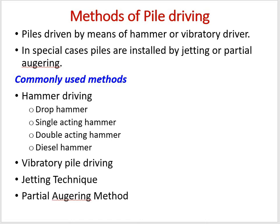The commonly used methods are hammer driving. In hammer driving you have the drop hammer — the conventional drop hammer where by gravity, using a guide, you drop the hammer on the pile top. Then there is the single acting hammer and double acting hammer, where steam pressure is applied on the pile. The last one is the diesel hammer, which is quite commonly used. Then comes vibratory pile driving, rarely used, then the jetting technique, and the partially augured method.